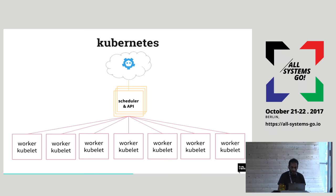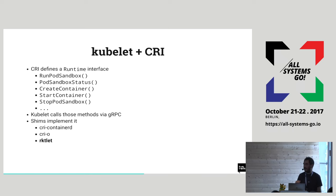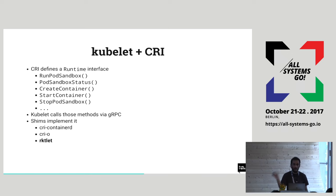The Kubelet runs on each host and is responsible for creating the actual containers. The Kubelet defines an interface called the CRI (Container Runtime Interface). CRI defines methods that express what you want to do with containers — for example, 'run pod sandbox' to start a new sandbox, then 'create container in that sandbox,' and then start it, stop it, get its status, and so on. This is implemented via gRPC, so the Kubelet calls one of those methods and something on the other side listens and performs the actual operation.